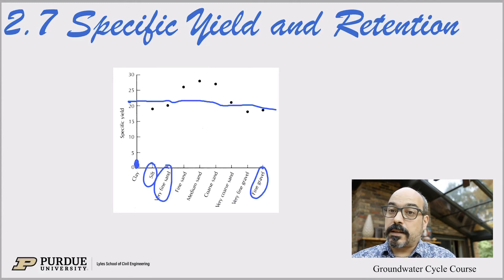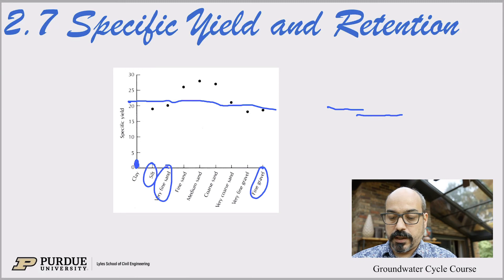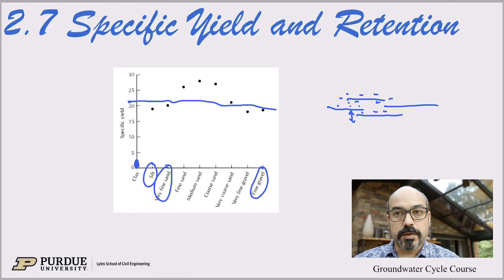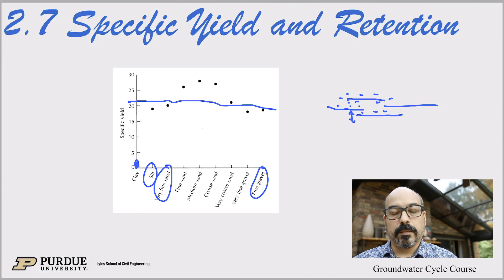Now look at clay — clay has very, very little specific yield. That doesn't mean it has low porosity. Clay sometimes has a lot of porosity because clay particles are laminar and they are charged, with little charges around them that push them apart by electrostatic forces. So the porosity may be high, but the particles are so small and laminar that they retain a lot of water. Water that gets into a clay layer is essentially trapped there and can't leave — so porosity and specific yield are two different things.